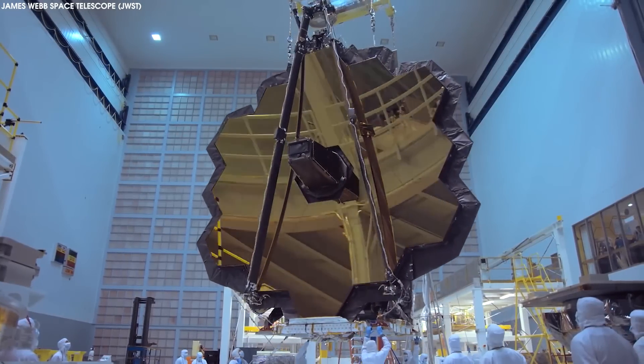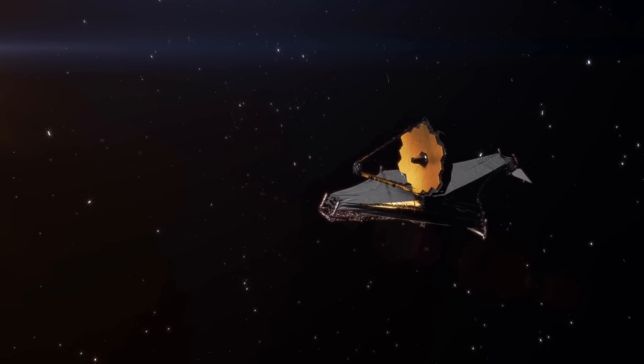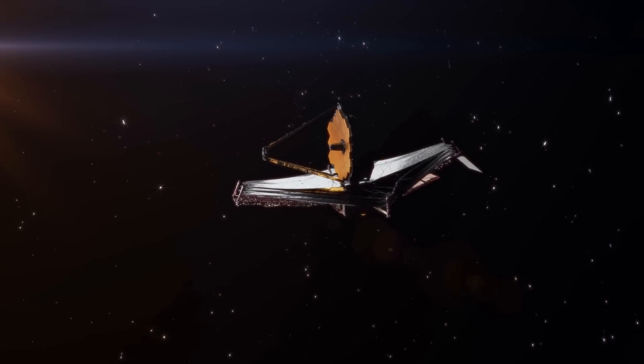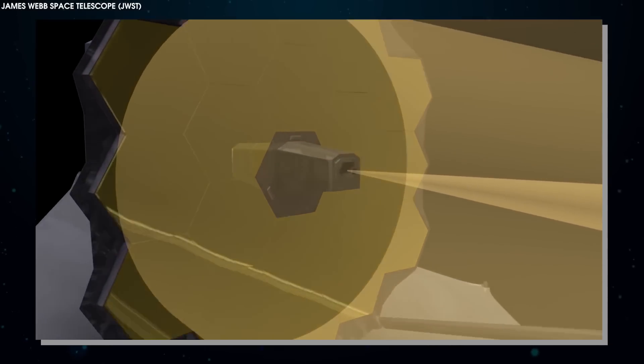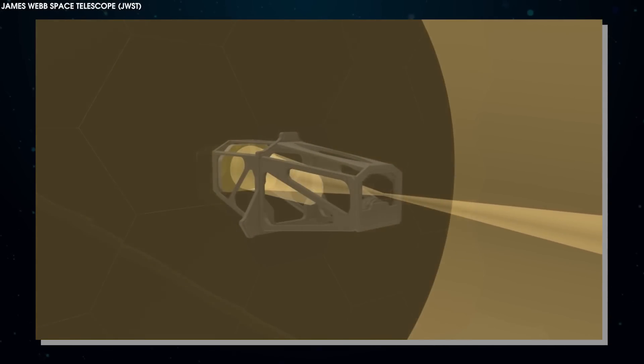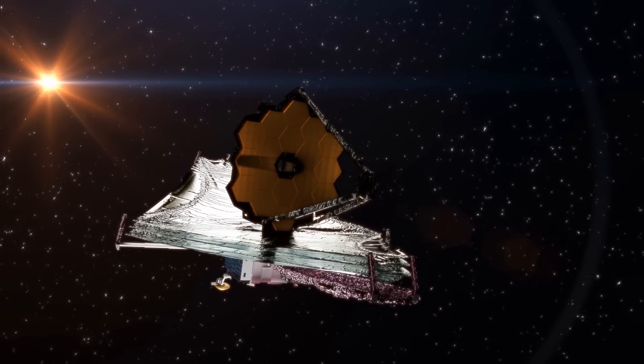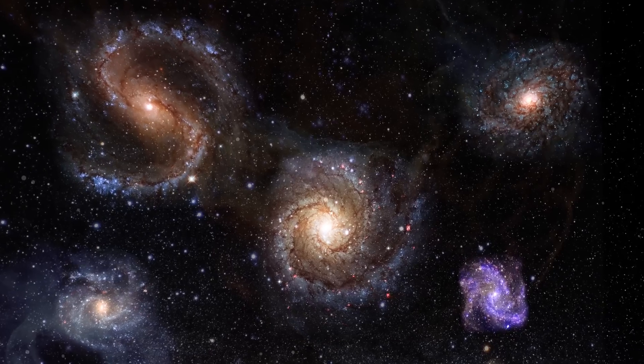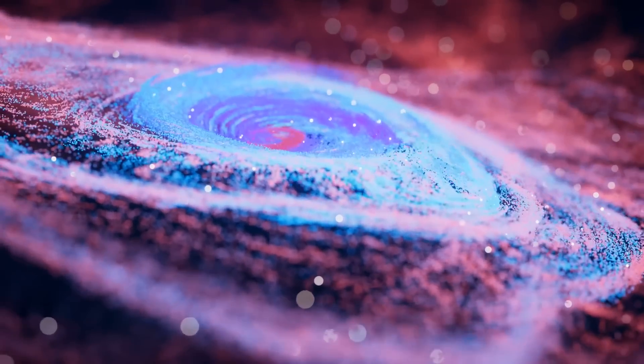The James Webb Space Telescope, JWST, is revolutionizing our understanding of the early universe. With a mirror larger than Hubble and the ability to observe deep into the infrared, JWST is giving us a detailed view of that period of the universe when galaxies were just starting to form.